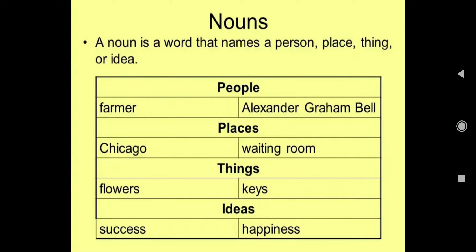Means, jitne bhi hamaré naming words hoongé, wo chahe kisi person ka name ho, place ka name ho, thing ka name ho, ya idea ka name ho, to wo sabhi noun kialaate hain. For example, when we are talking about people, so farmer — person ke baare mein baat ho rahi hai — that's why farmer, or Alexander Graham Bell, kisi particular person ka naam hai, so people's names noun kahlaayenge.